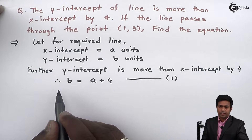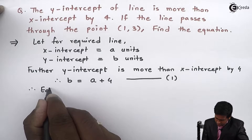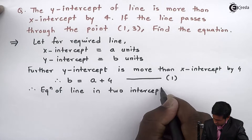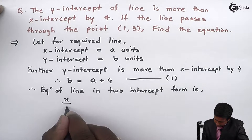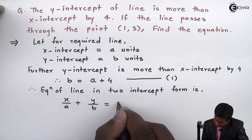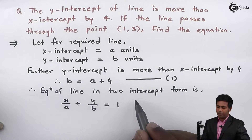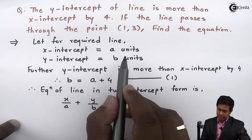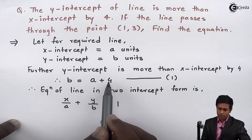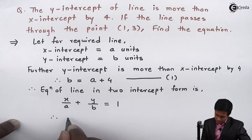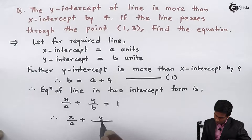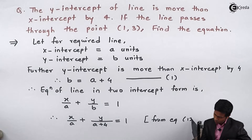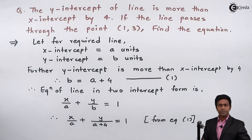Now we can use the two-intercept form. The equation of a line in two-intercept form is given by x/a + y/b = 1, where a is the x-intercept and b is the y-intercept. Substituting b = a + 4 from Equation 1, we get x/a + y/(a + 4) = 1.